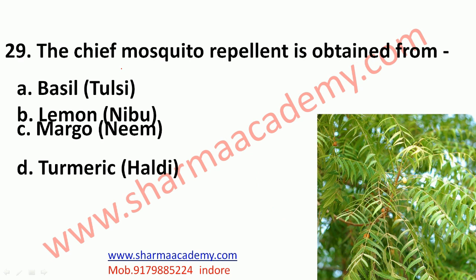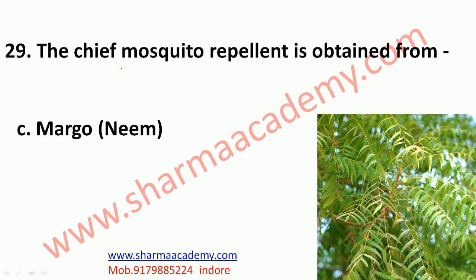The next question: the chief mosquito repellent is obtained from what? The options are basil (tulsi), lemon (nimbu), margo (neem), or turmeric (haldi). The correct option is margo — neem. The chief mosquito repellent is obtained from neem, which has several medicinal qualities. It is prepared from the seeds and leaves of neem.